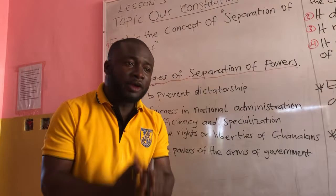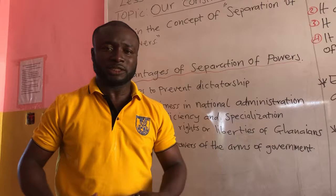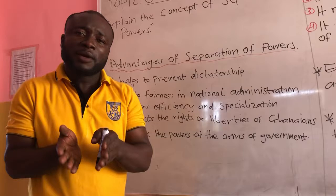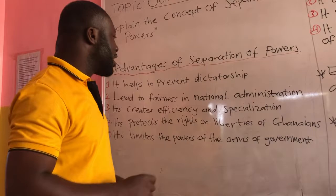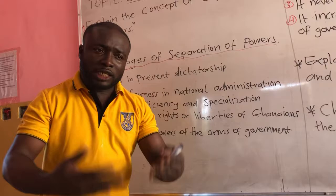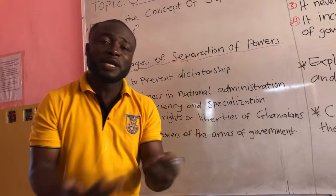The executive is always formulating and implementing policies, so they become specialized — they become experts in that area. The legislature or parliament also makes and amends laws. As they keep on making and amending laws, they become specialized in that area. That is what is meant by efficiency and specialization.